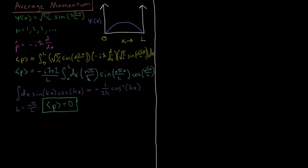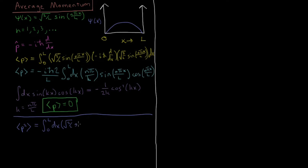We can continue and calculate the expectation value of momentum squared. Applying the square of an operator is equivalent to applying that operator twice. So setting up the integral in the same way — with the square root of 2 over L times sine(n pi x / L) — the operator is now p applied twice: minus i h-bar d/dx applied twice, i.e., (minus i h-bar d/dx)(minus i h-bar d/dx).